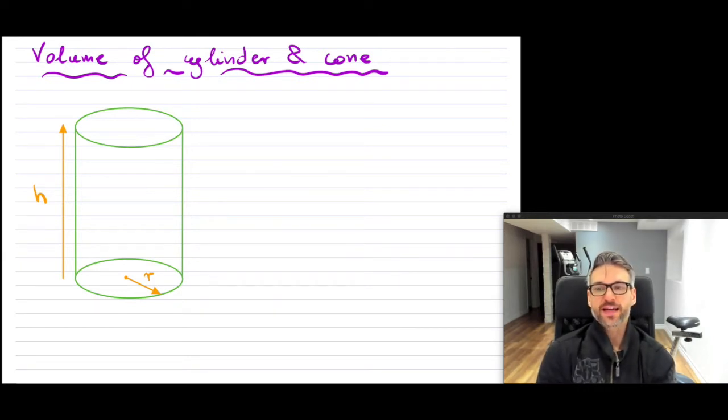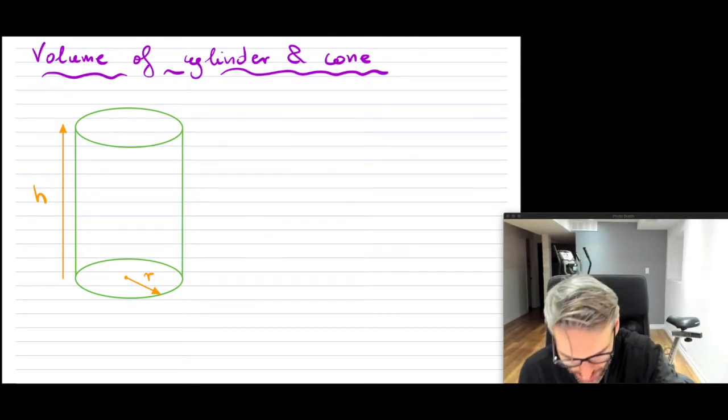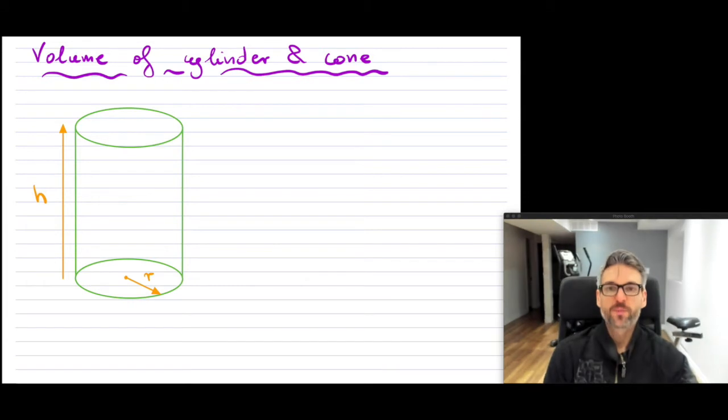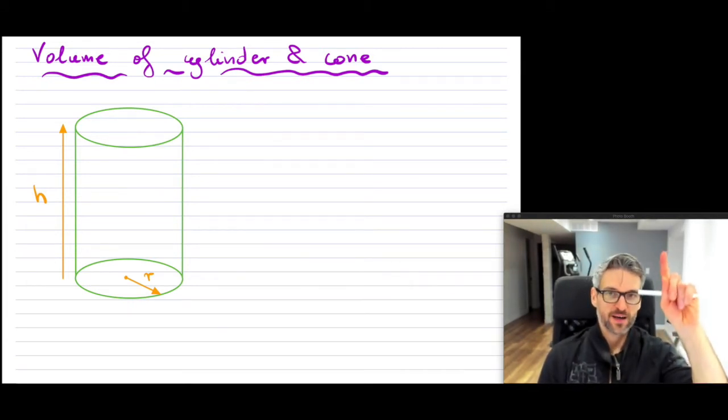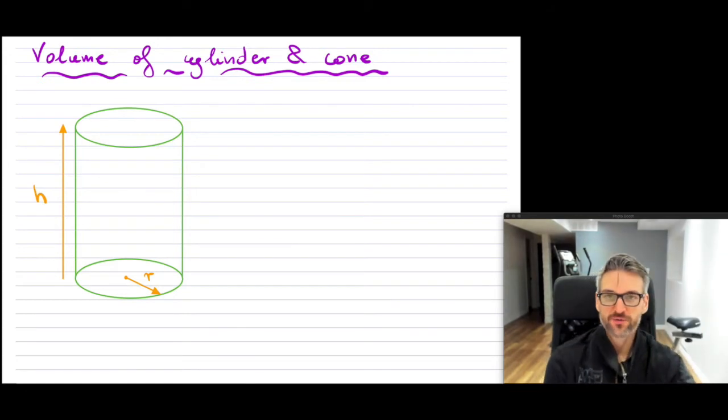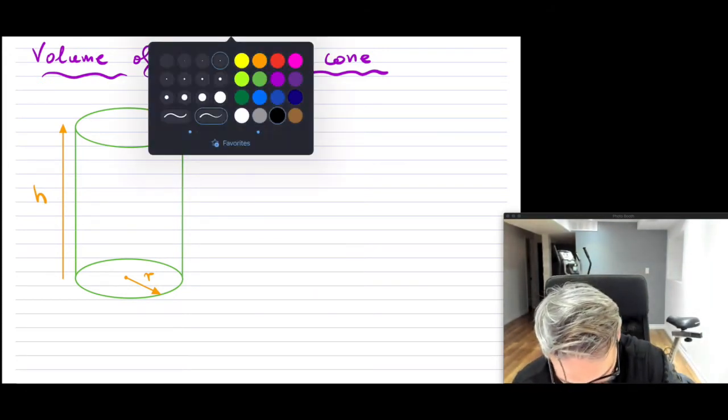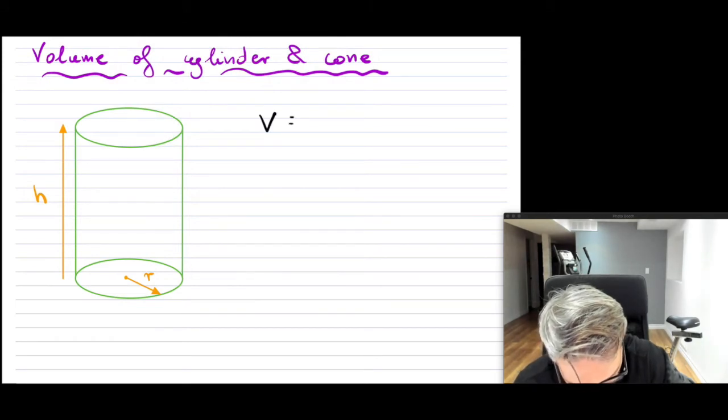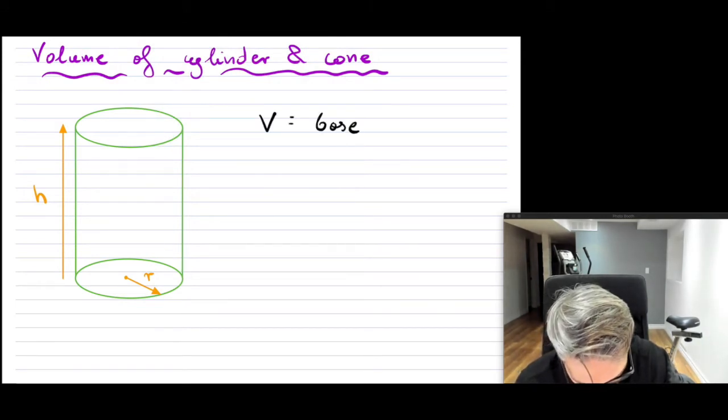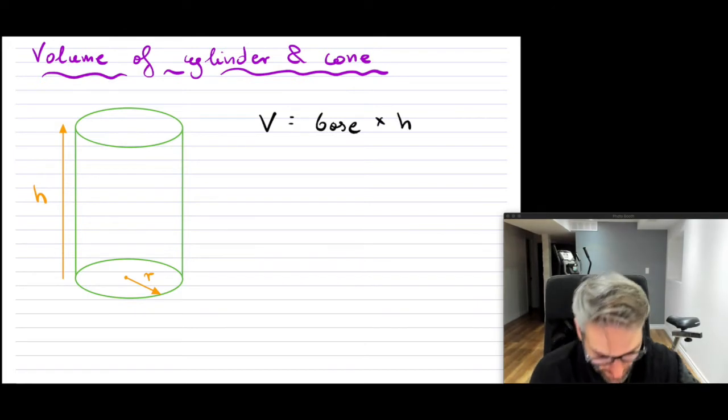So volume of a cylinder and a cone. If you're talking about the volume, I just want to remind you. So for prisms, which I discussed, I'll put a link up above there. You can take a look if you haven't seen that one. So for prisms, we know that the volume is equal to the base multiplied by the height.